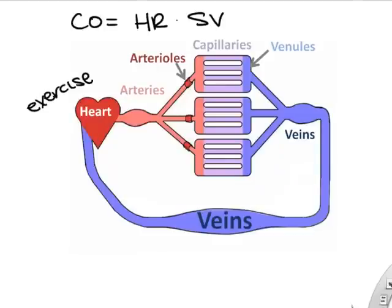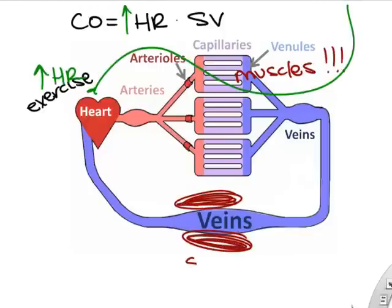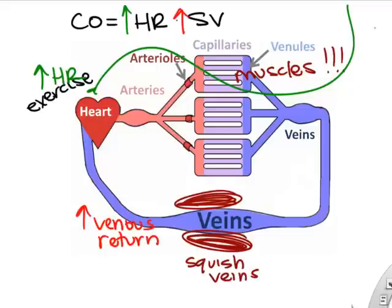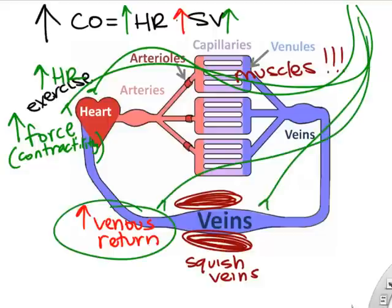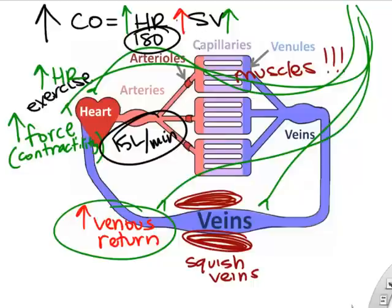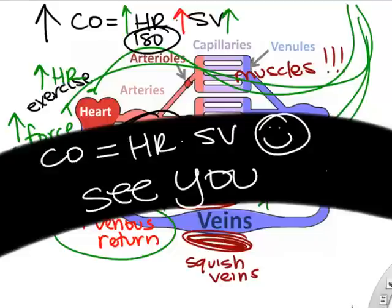Cardiac output changes significantly during exercise. You need more blood to working muscles, so you increase cardiac output by increasing heart rate, increasing venous return through muscle squeezing veins, and increasing contractility — each myocyte contracting with more force through the autonomic nervous system. When exercising, cardiac output can reach 15 to 20 liters per minute to deliver more blood to the body.